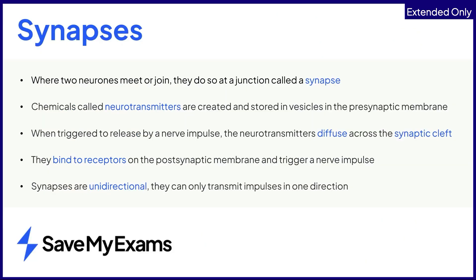In summary, a synapse is a gap between two neurons. Chemicals called neurotransmitters are created and stored in structures called vesicles, which are found in the presynaptic membrane. When an electrical impulse reaches the end of the neuron, it causes the neurotransmitters to be released and they diffuse across the synaptic cleft. When they reach the postsynaptic membrane, they bind to receptors in the membrane. This triggers a nerve impulse in the second neuron.